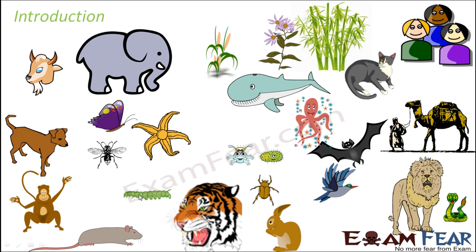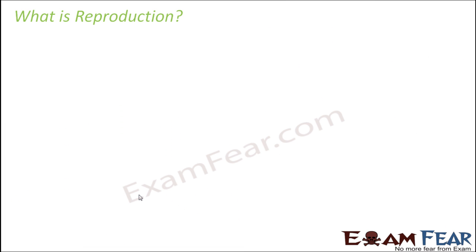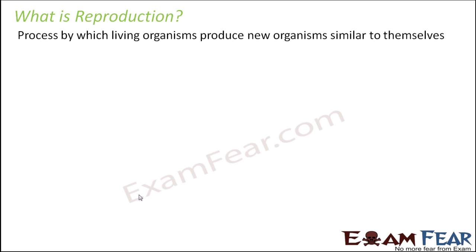In this lesson, we are going to talk about the process of reproduction — how it happens, why it happens, and what are the different ways by which different organisms reproduce. We will talk about all the details regarding reproduction. Let us now define reproduction: it is the process by which living organisms produce new organisms similar to themselves.